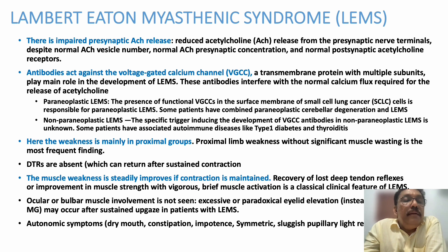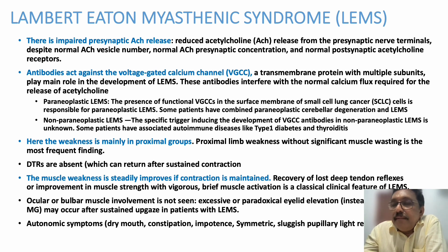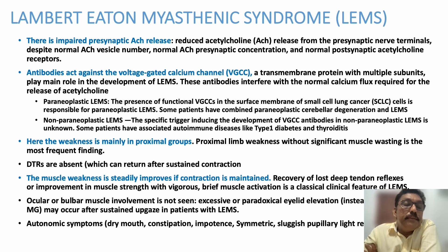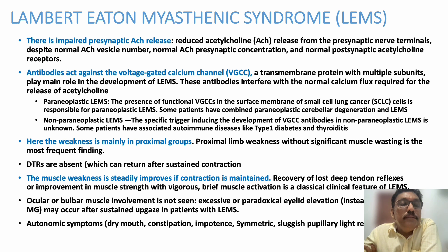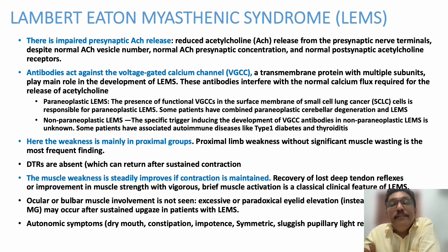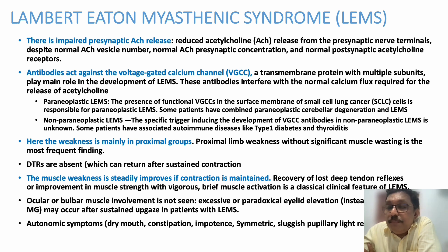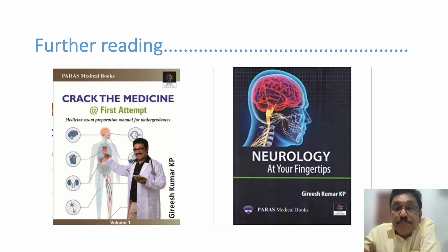Lambert-Eaton syndrome is a myasthenic syndrome, but the clinical findings are exactly opposite to myasthenia gravis. It is classically seen as a paraneoplastic syndrome in elderly individuals; the main associated tumor is lung malignancy. Here, the patient initially has weakness but slowly improves with repetitive movements — the opposite of myasthenia gravis, where repetitive movement worsens weakness.